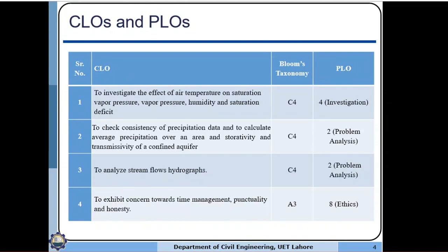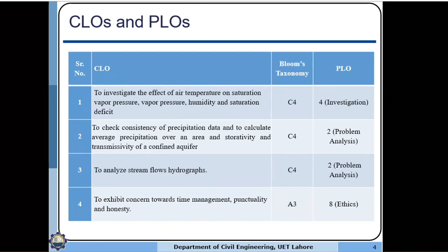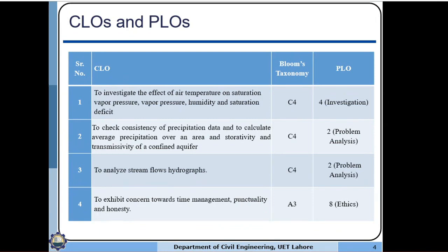CLO 2 is to check the consistency of precipitation data, calculate average precipitation over an area, and determine storativity and transmissivity of a confined aquifer. Design jobs two, three, and seven will contribute to CLO 2. It is related to PLO 2, which is Problem Analysis, and also has a taxonomy level of C4. CLO 3 is to analyze the stream flow hydrograph; design jobs five and six will contribute to this CLO, also at C4 level and linked to PLO 2.